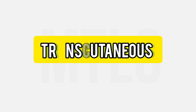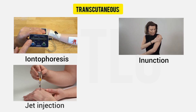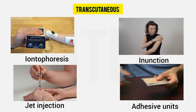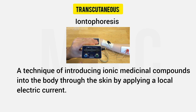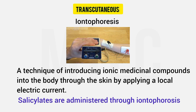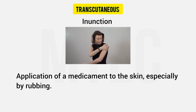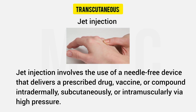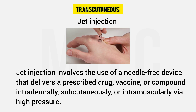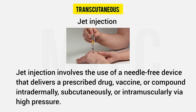Transcutaneous route has four types: iontophoresis, injection, jet injection, and adhesive units. Iontophoresis uses galvanic current to drive the drug through the skin — salicylates are an example. Nitroglycerin ointment is used transdermally for angina patients. Jet injection uses a high-velocity jet through a microfine orifice to deliver drug into superficial layers of the skin.